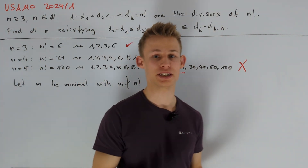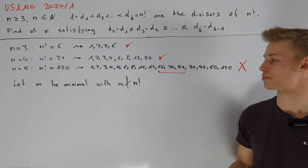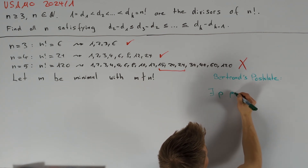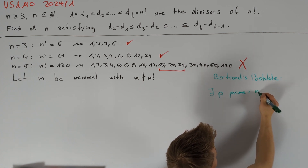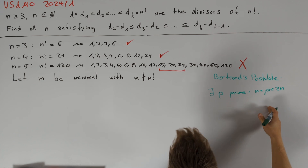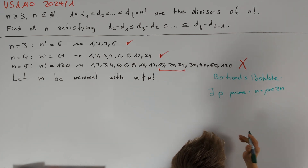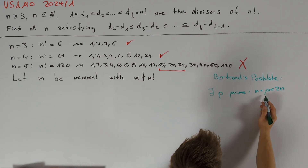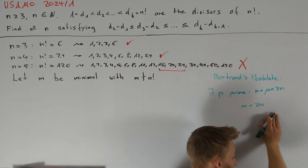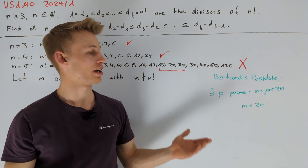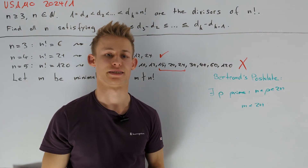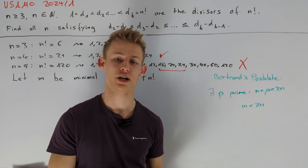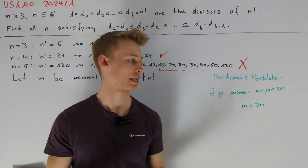There is actually a really short way of doing this which uses Bertrand's postulate. Bertrand's postulate tells us we can find a prime p such that p lies between n and 2m. This gives an upper bound for m because p does not divide n factorial, so m ≤ p < 2m. If you're interested in this approach, you can try to finish it yourself, or check out the solution PDF linked in the description.